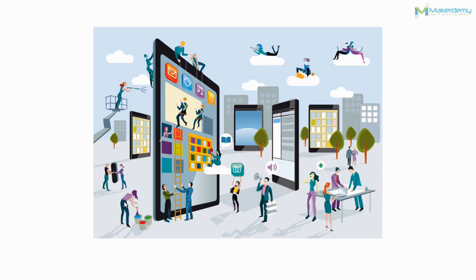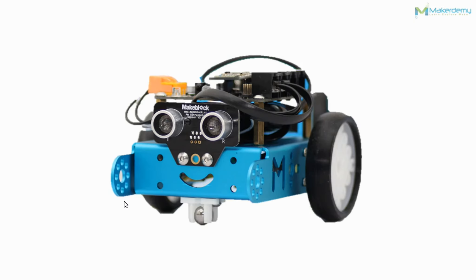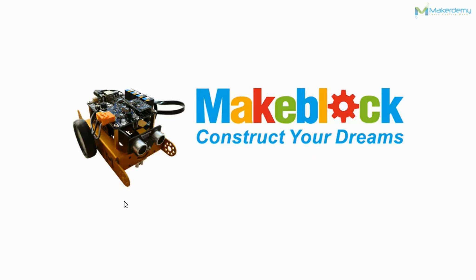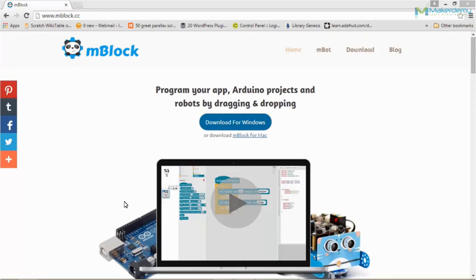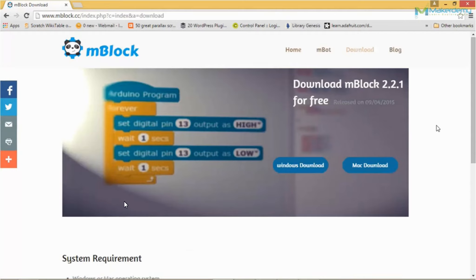We will experience the interaction between the physical world and software through learning the course. The course consists of three parts: AMBOT robot, AMCOR mainboard and AMBlock. You can download the AMBlock software in the following address. This software is supported for Mac and Windows system. Let us download for Windows.